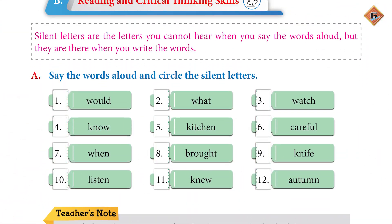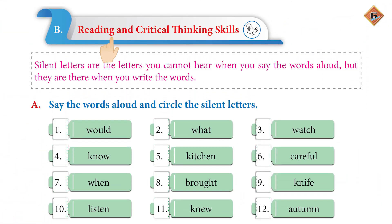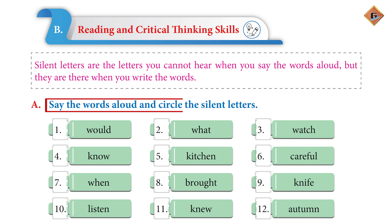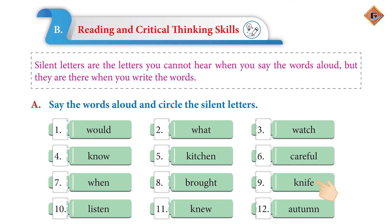Page number 105, Reading and Critical Thinking Skills. Here we are talking about Silent Letters. These letters are parts of words and spellings, but they don't have sound in the words. For example, you can take 'Knife' — K-N-I-F-E. In 'Knife', the K is silent.